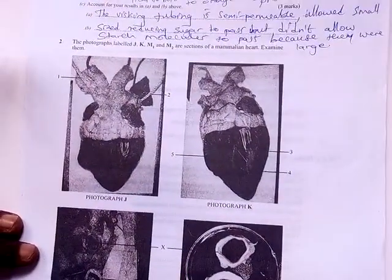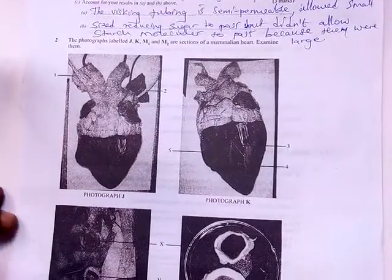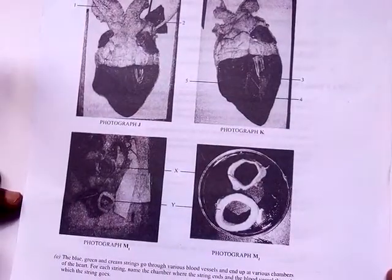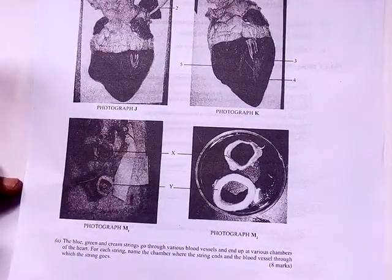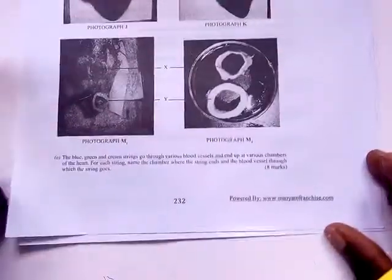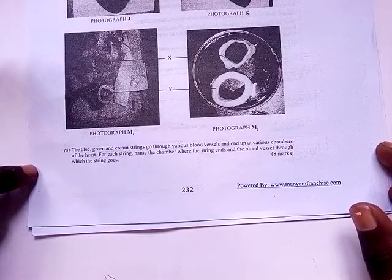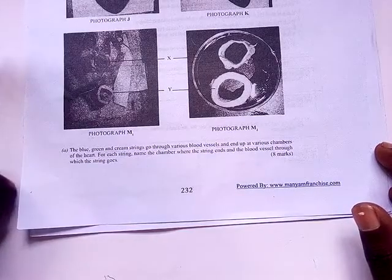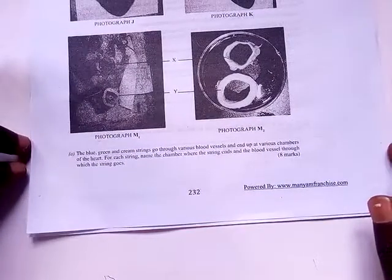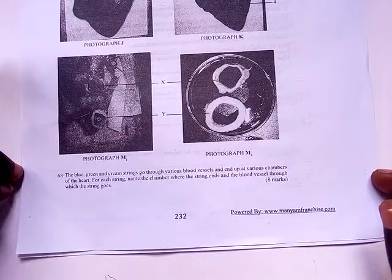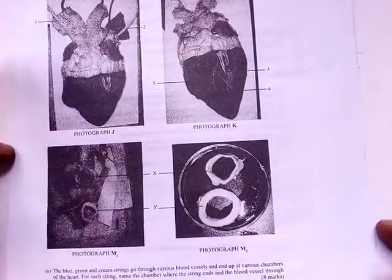Question 2: Photographs labeled J, K, M1 and M2 are sections of a mammalian heart. Examine them. You can see the hearts and the blood vessels. You are told the blue, green and cream strings go through various blood vessels and end up in various chambers of the heart. Name the chamber where each string ends and the blood vessel through which each string goes.